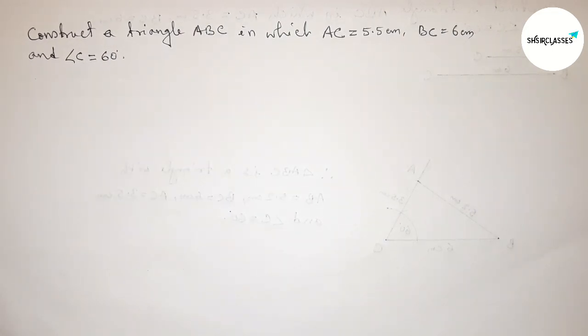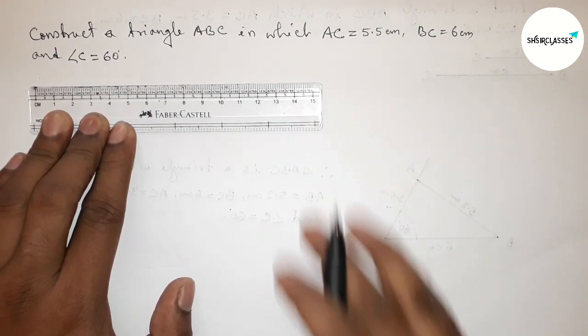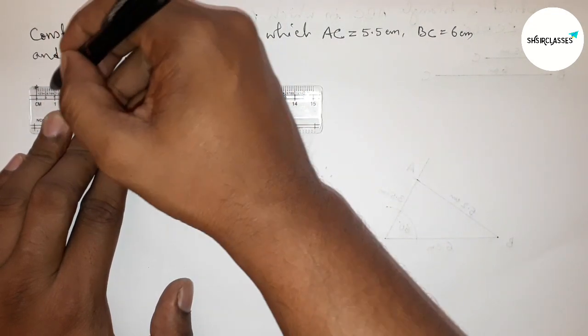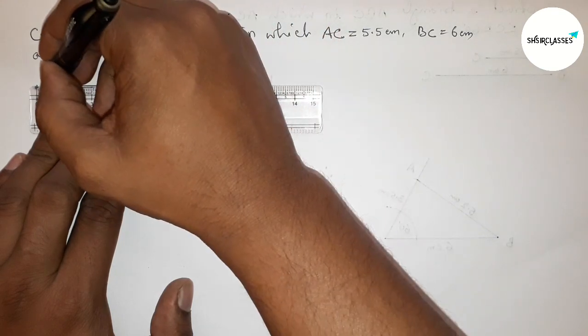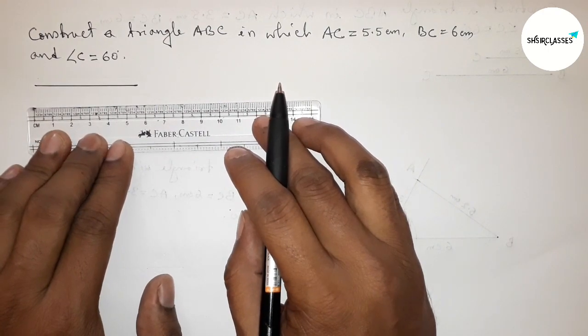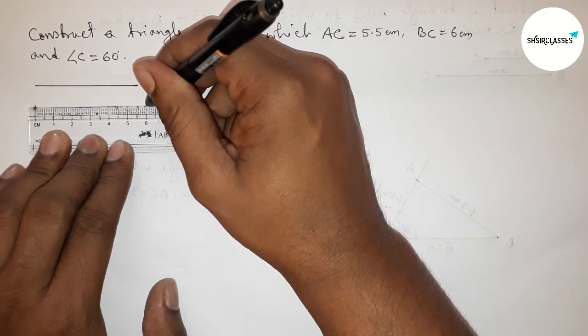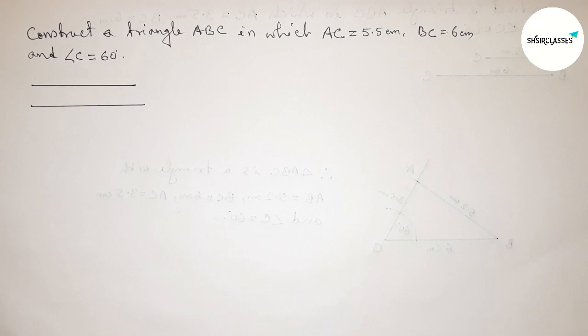Let's start the video. First of all, let us draw the given two sides. So first drawing here 5.5 centimeter, so this is a 5.5 centimeter line. Now drawing another line, 6 centimeter, so this is 6 centimeter.